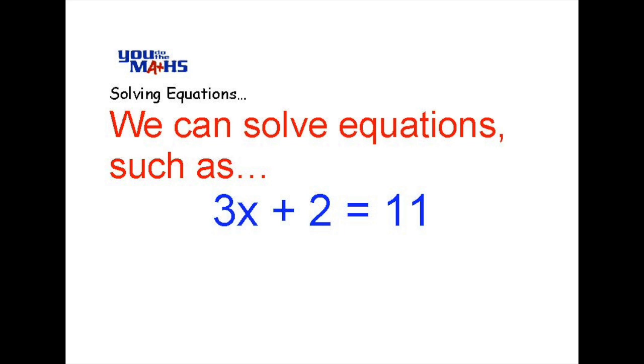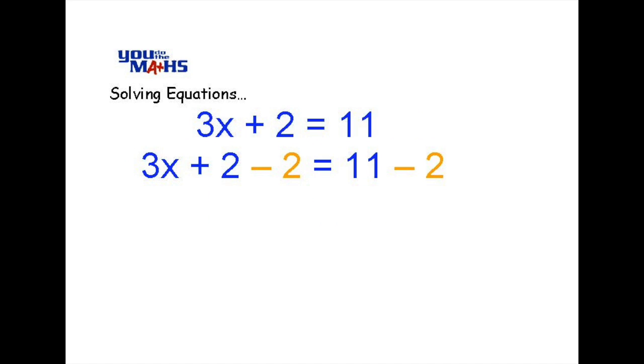What we need to do is find x so we look at removing values near the x. Initially we look at removing the plus 2 by subtracting 2 from both sides. That leaves us with 3x on the left hand side and just 9 on the right hand side.